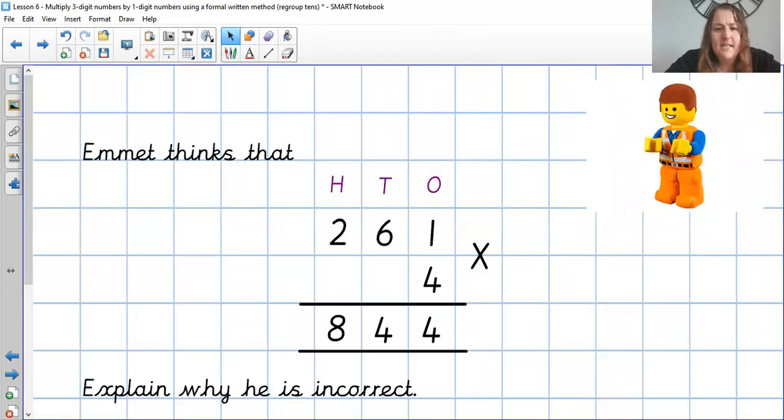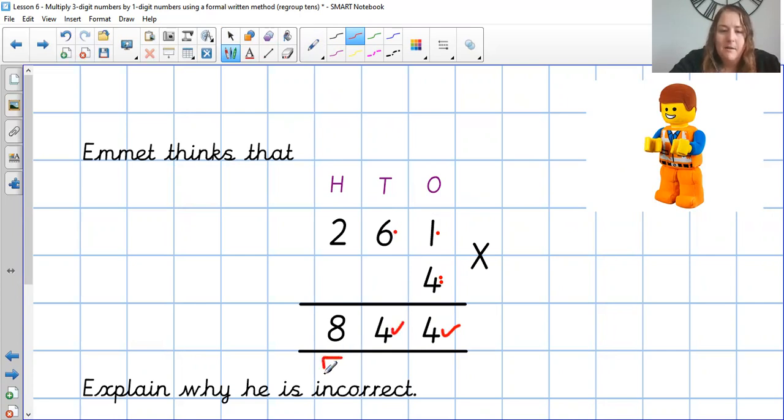Emmett thinks that 241 times 4 is 844. Explain why he is incorrect. Let's see what he's done. The first thing we need to do is 4 times 1 which I agree is 4. Then we do 4 times 6. And 4 times 6 is 24. So the 4 I agree with. But this is where he hasn't regrouped and he hasn't put his number 2 down there. Because then when he does his final 4 times 2 the answer is 8. But he needed to add on the 2 that he missed off.